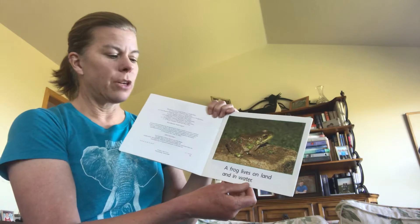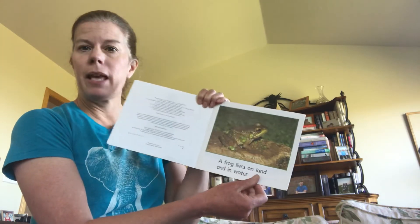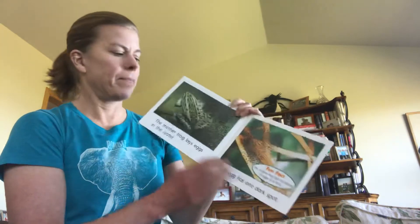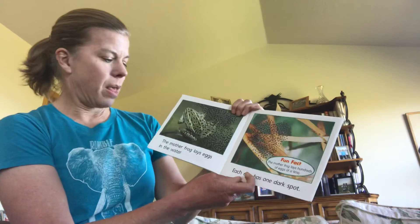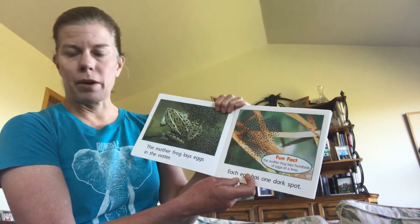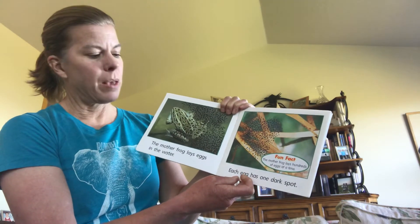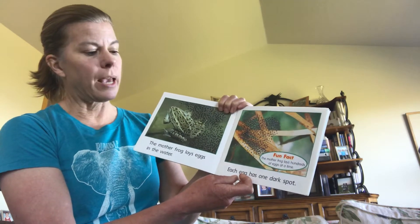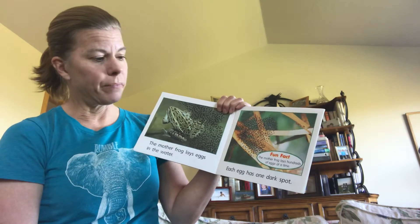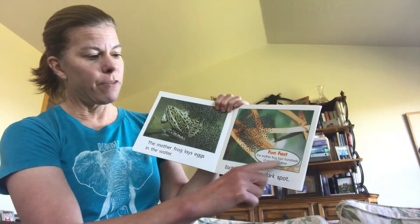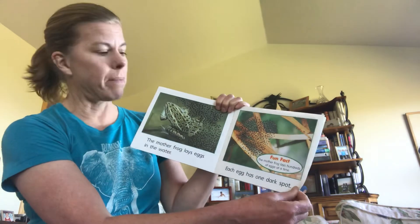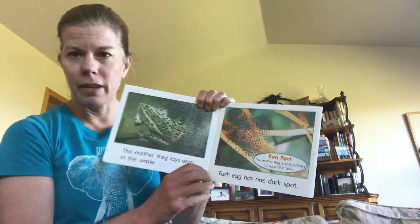A frog lives on land and in water. The mother frog lays eggs in the water. Each egg has one dark spot. The mother frog lays hundreds of eggs at a time. Can you see those?